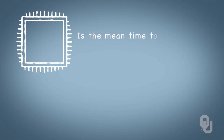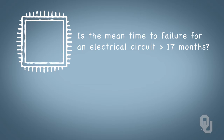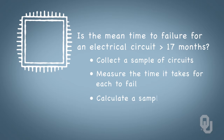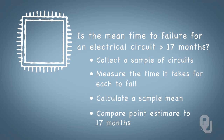We extend these ideas to further answer questions about population parameters. For example, we might want to know if the mean time to failure for a particular electrical circuit is greater than seventeen months. Naively, we might collect a sample of circuits, measure the time it takes for each to fail, calculate a sample mean, and compare that point estimate to the seventeen months. But we know better than that.